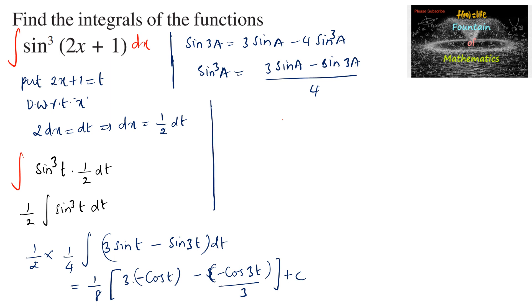This simplifies to minus 3/8 cos t plus 1/24 cos 3t plus c.